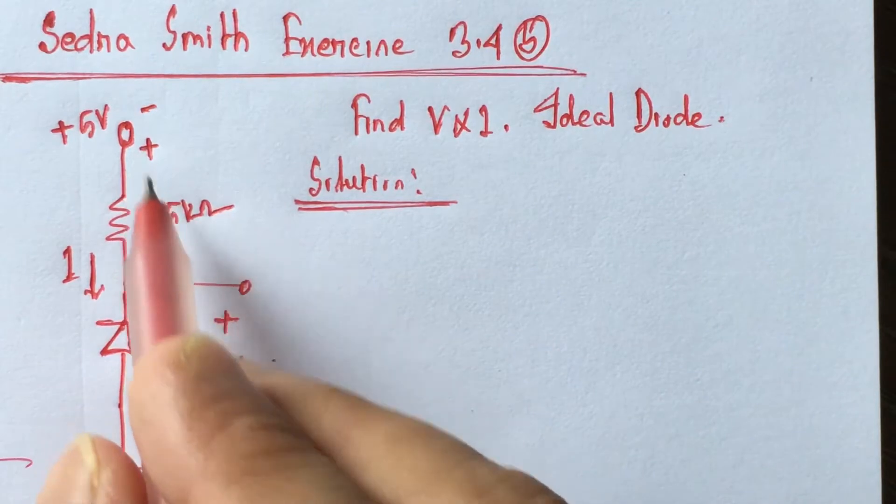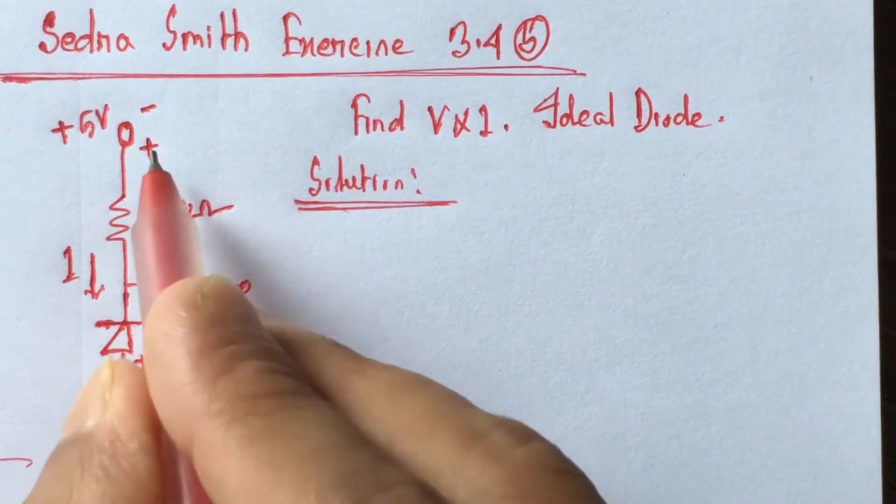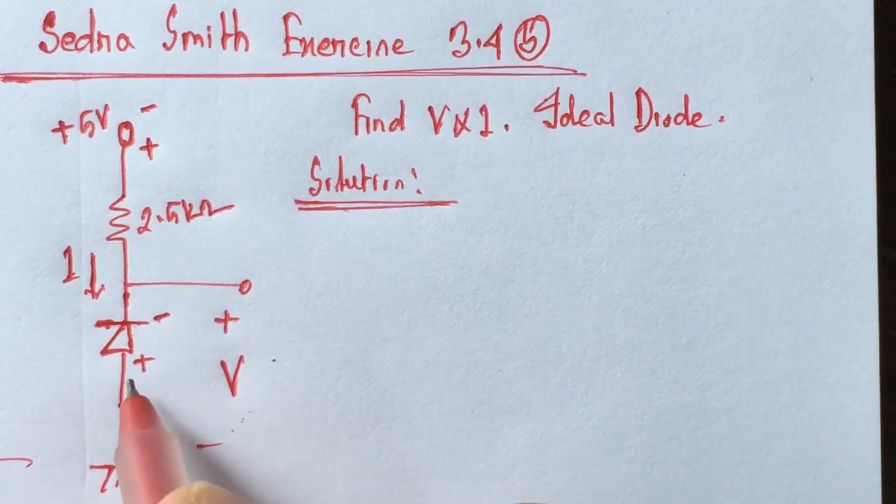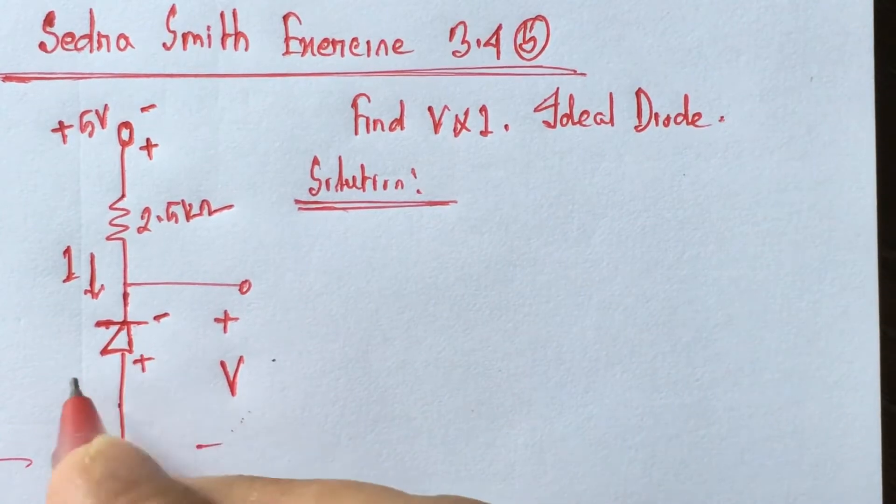So, from the circuit we see that diode is reverse biased. This is positive end, this is negative end. So, diode is reverse biased and diode will not conduct.